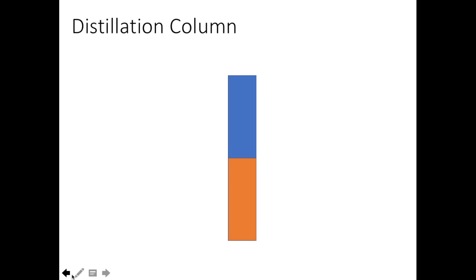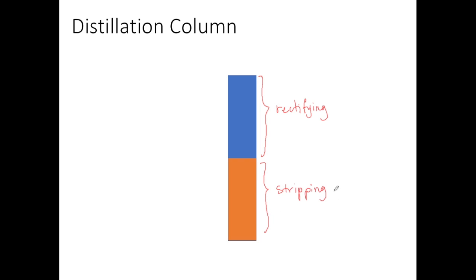The distillation column can be separated into two sections: the top section, called the rectifying section, and the bottom section, called the stripping section. We can write two different mass balance equations for these two sections, and these mass balance equations are called operating lines. So there are two operating lines — one for the rectifying section and one for the stripping section.